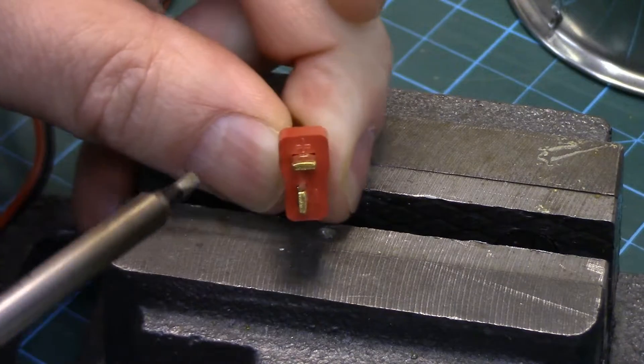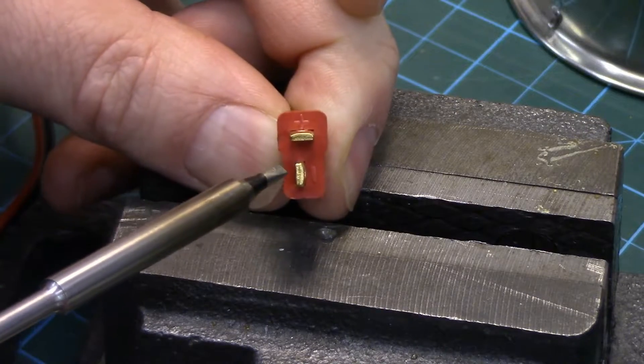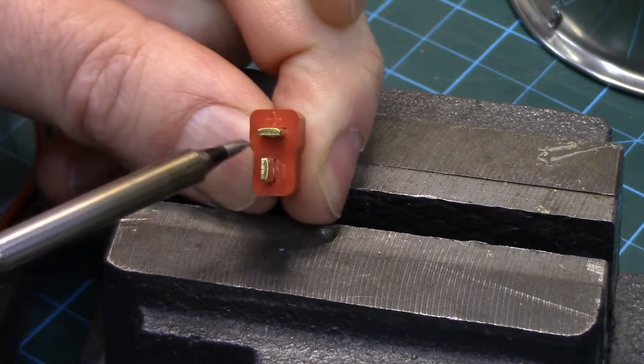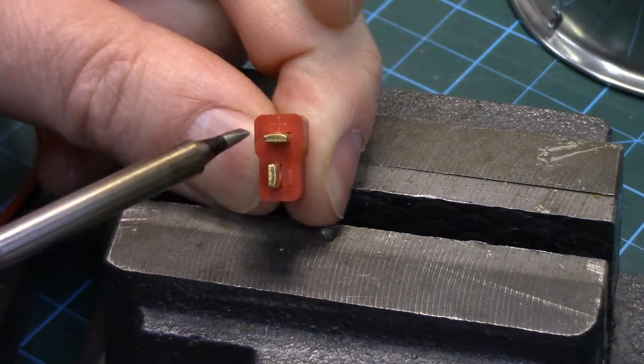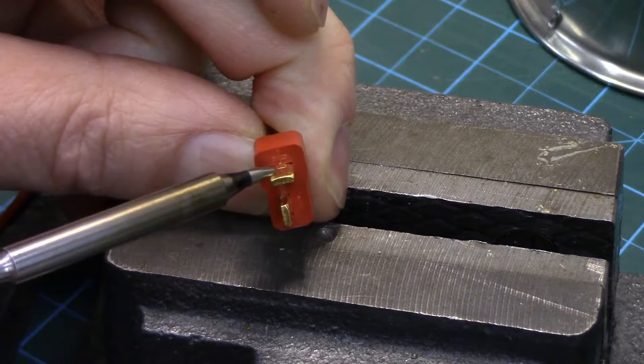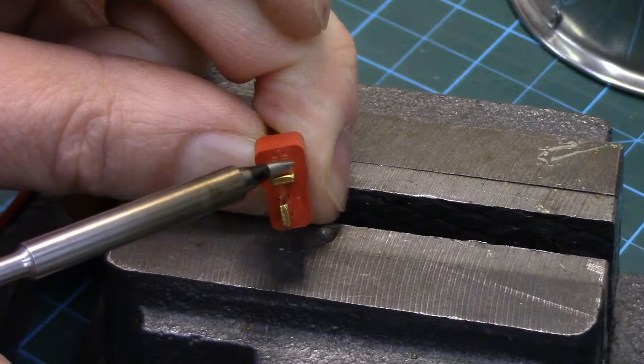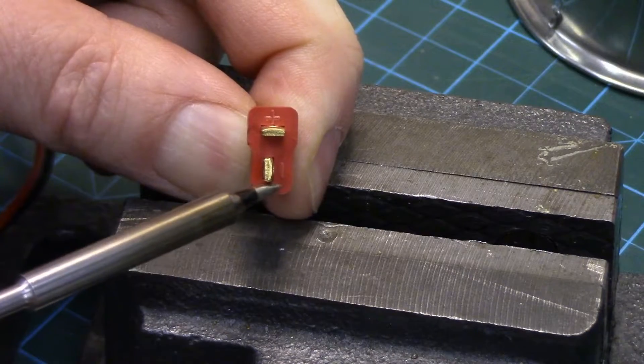Before getting to the soldering, I just want to point out on the Deans or T connectors, they are marked with a plus and a minus, so they are polarity marked, so you're going to have your red wire, generally on the plus side, of course, and the negative on the bottom one.